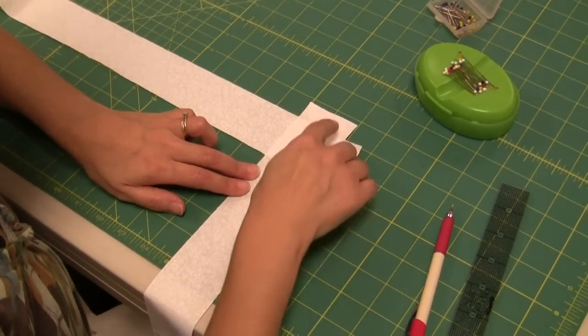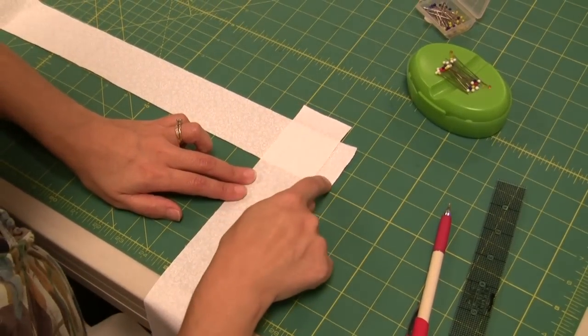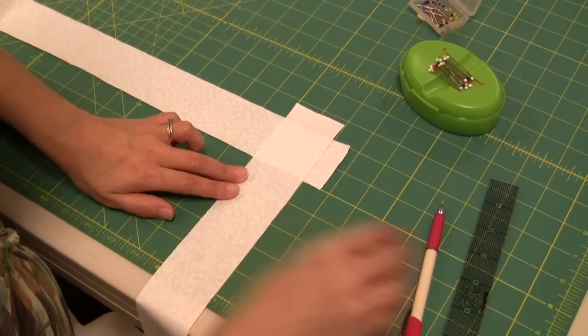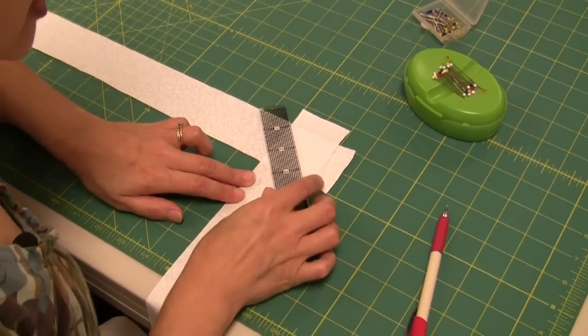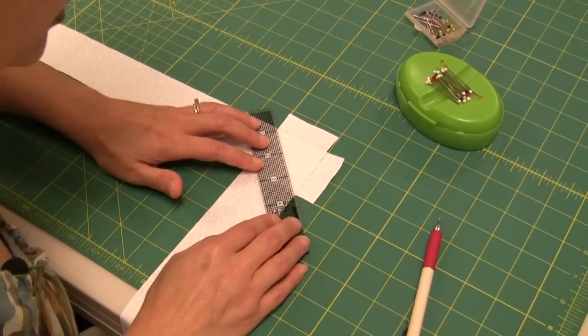I also overlap top and bottom or top and side where my selvages are. The reason I do that is that it's much easier to see your corners if you have a little bit of an overlap.